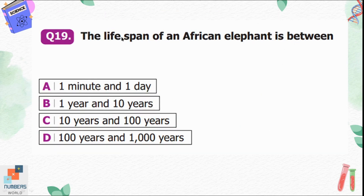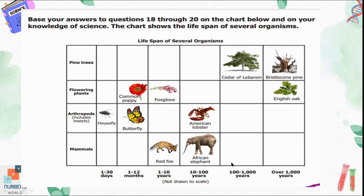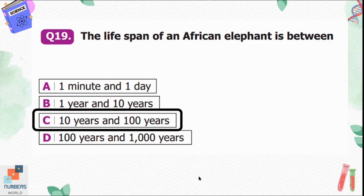Question number nineteen: the lifespan of an African elephant is between option A, 1 minute to 1 day; B, 1 year and 10 years; C, 10 years and 100 years; D, 100 years and 1000 years. From the chart, we can see the African elephant lives 10 to 100 years, so option C is the correct option.